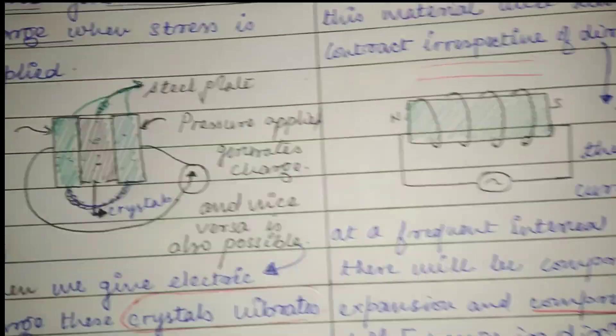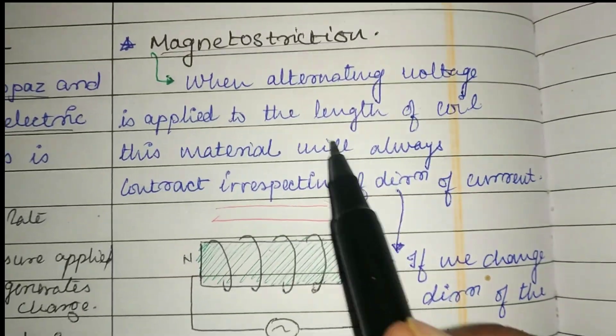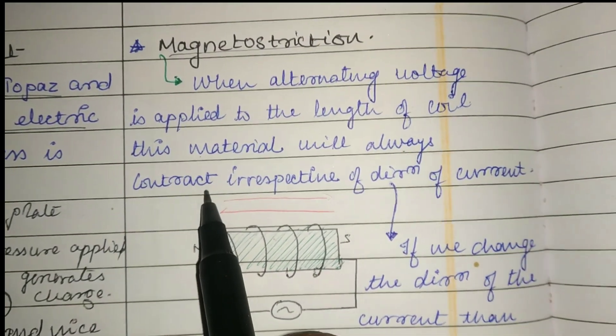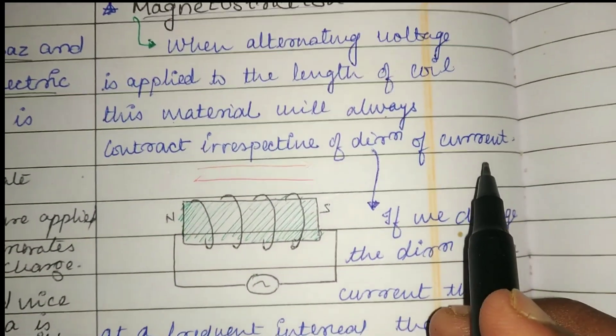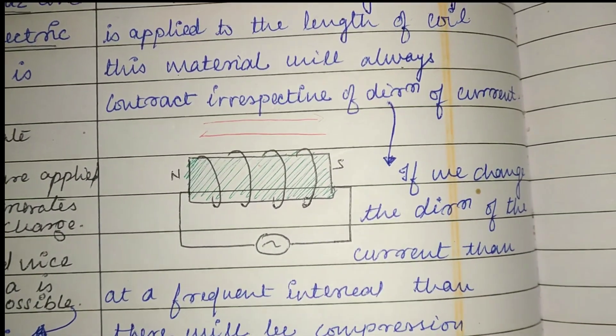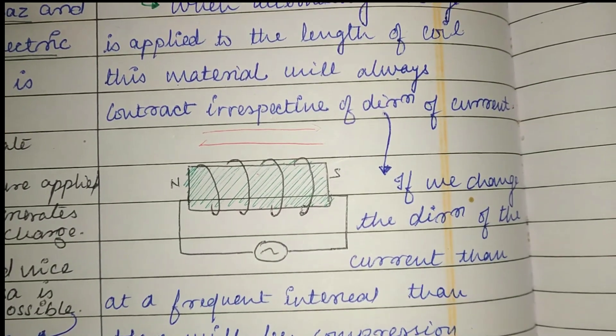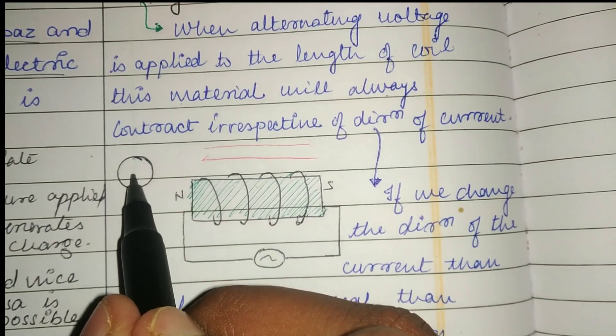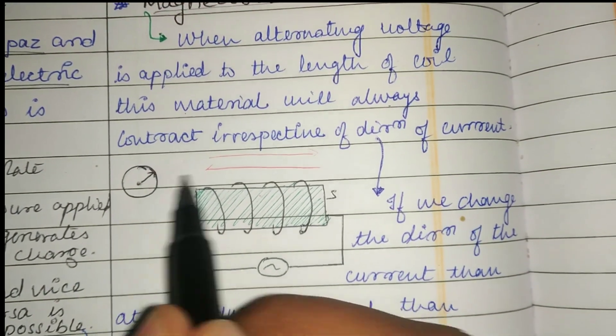Now let's understand the principle of magnetostriction. When alternating voltage is applied to the coil, the material will always contract irrespective of the direction of current. If we change the current direction at frequent intervals, there will be compression, expansion, and compression of the coil again. This is the principle of magnetostriction.